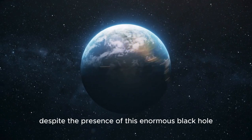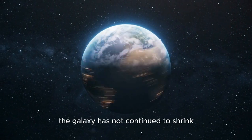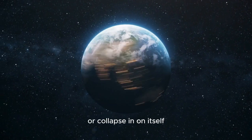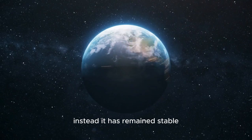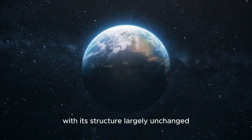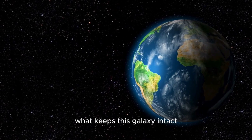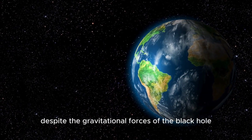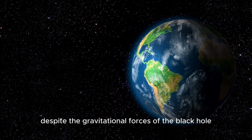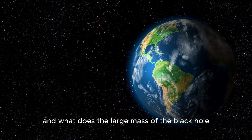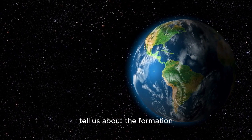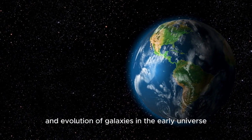Despite the presence of this enormous black hole, the galaxy has not continued to shrink or collapse in on itself. Instead, it has remained stable, with its structure largely unchanged over the course of billions of years. What keeps this galaxy intact, despite the gravitational forces of the black hole? And what does the large mass of the black hole tell us about the formation and evolution of galaxies in the early universe?